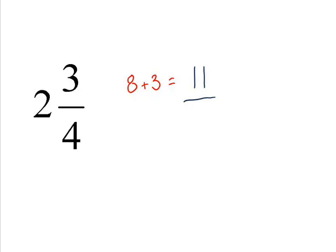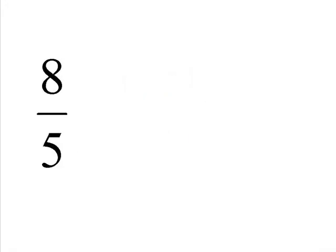And we get the bottom number, well, it's the same as the one in the mixed number, so the bottom number is 4. So 2 and 3 quarters as an improper fraction is 11 over 4. That simple.